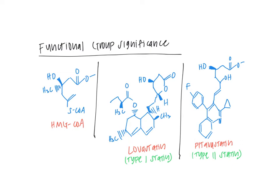It is also important to mention that there are two types of statins: type 1 statins, such as lovastatin, simvastatin, and pravastatin, and type 2 statins, such as fluvastatin, atorvastatin, rosuvastatin, and pitavastatin. Type 1 statins are natural or semi-synthetic, and type 2 statins are synthetic. These type 1 and type 2 statins have distinct functional groups that interact specially with the HMG-CoA reductase enzymes.